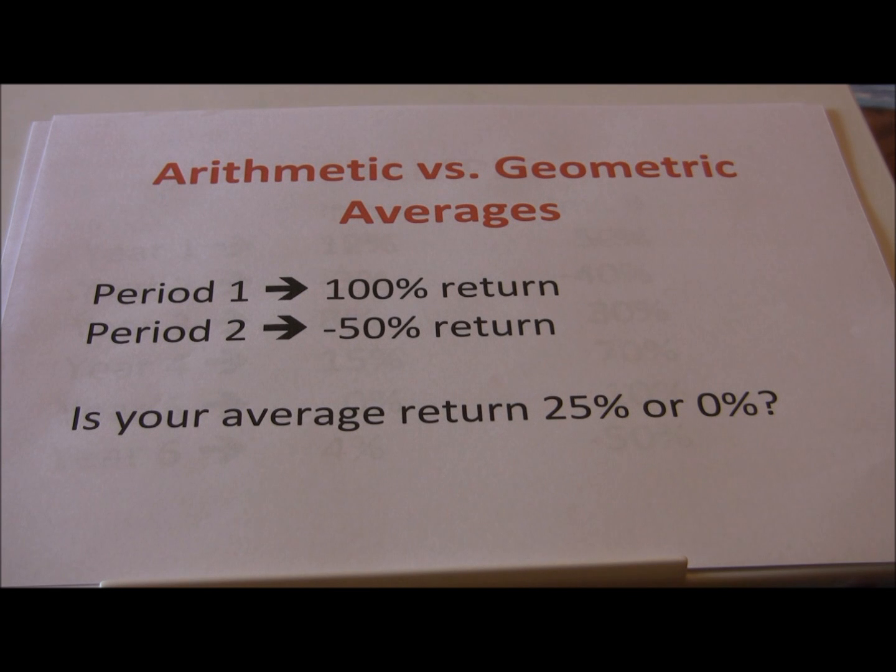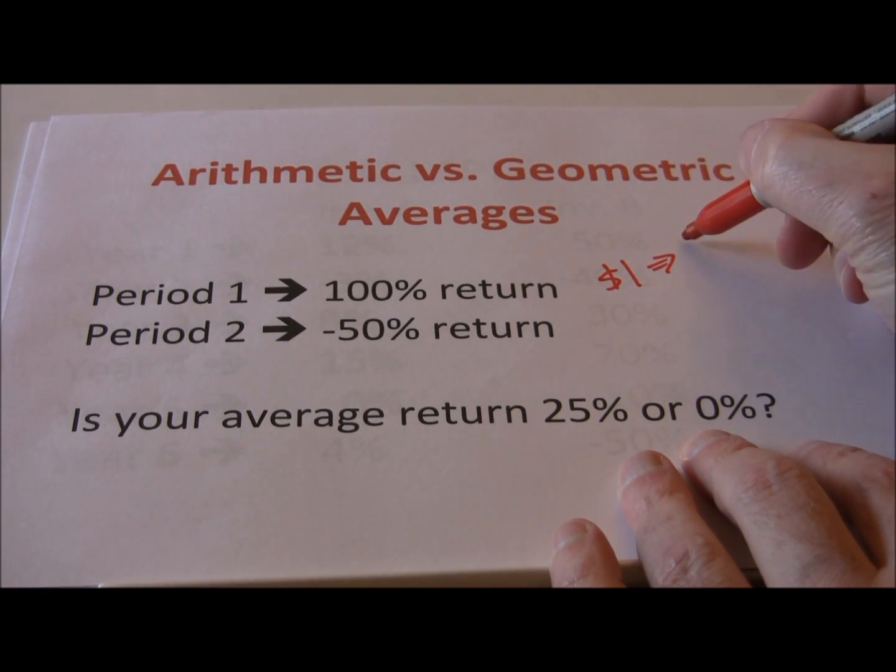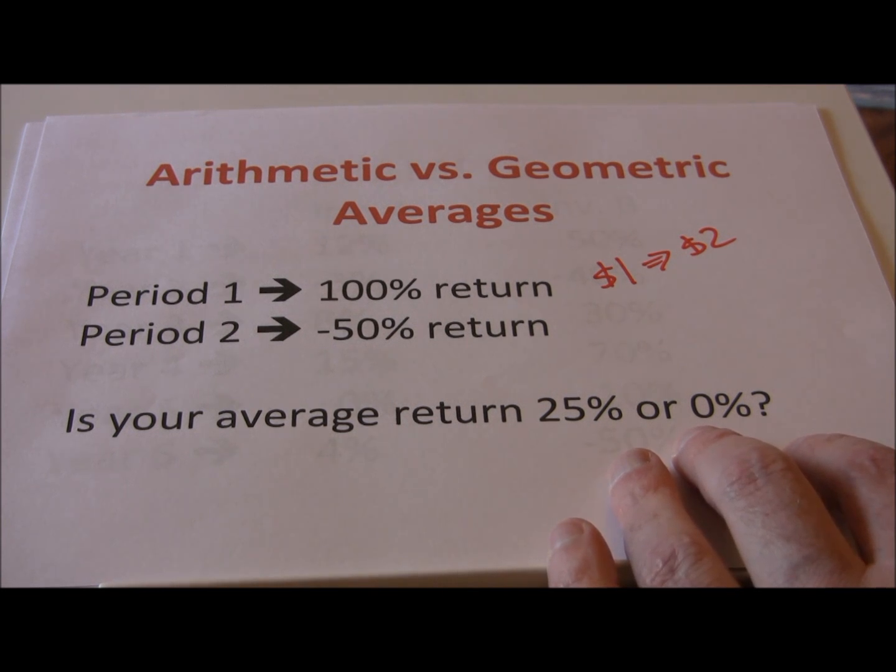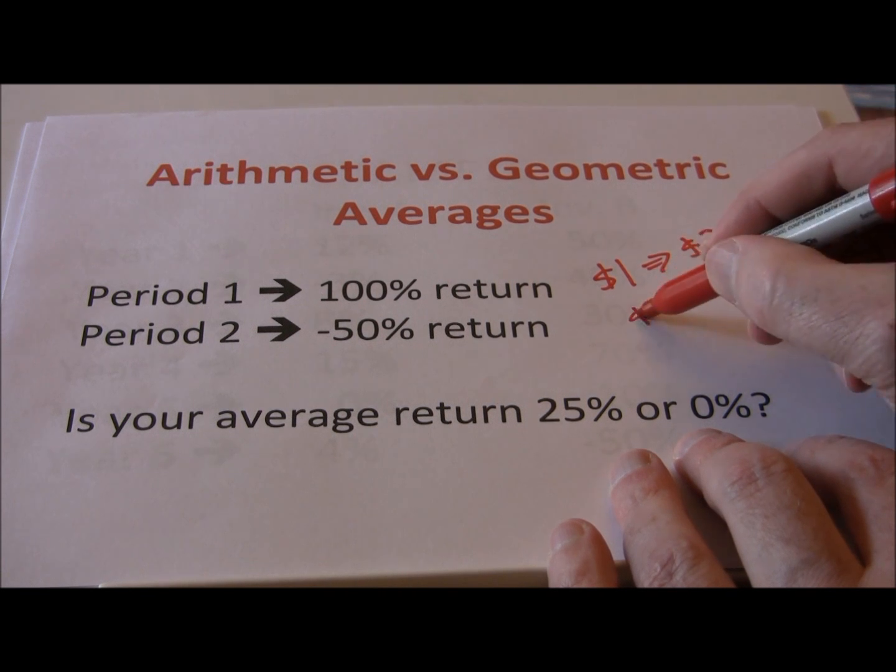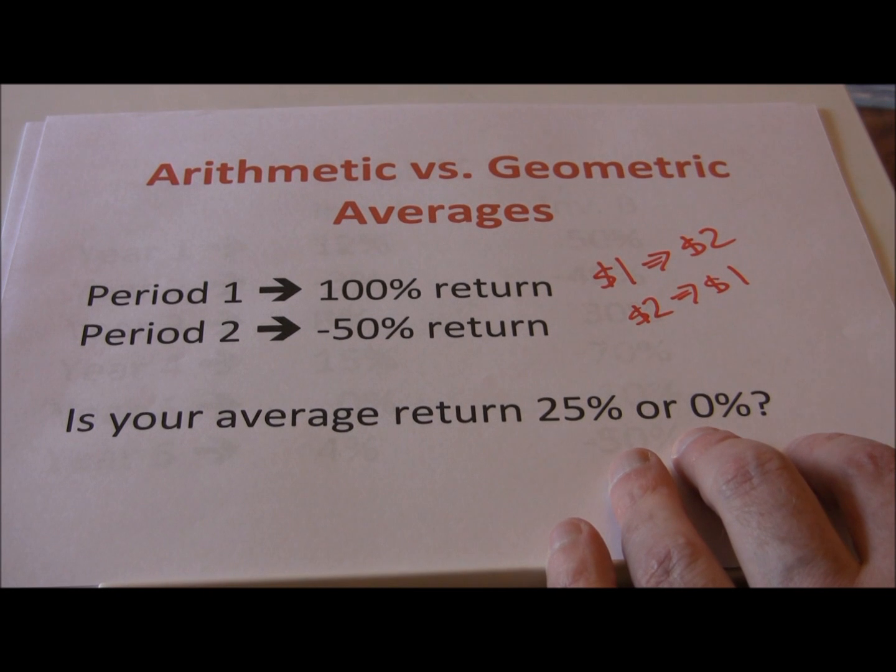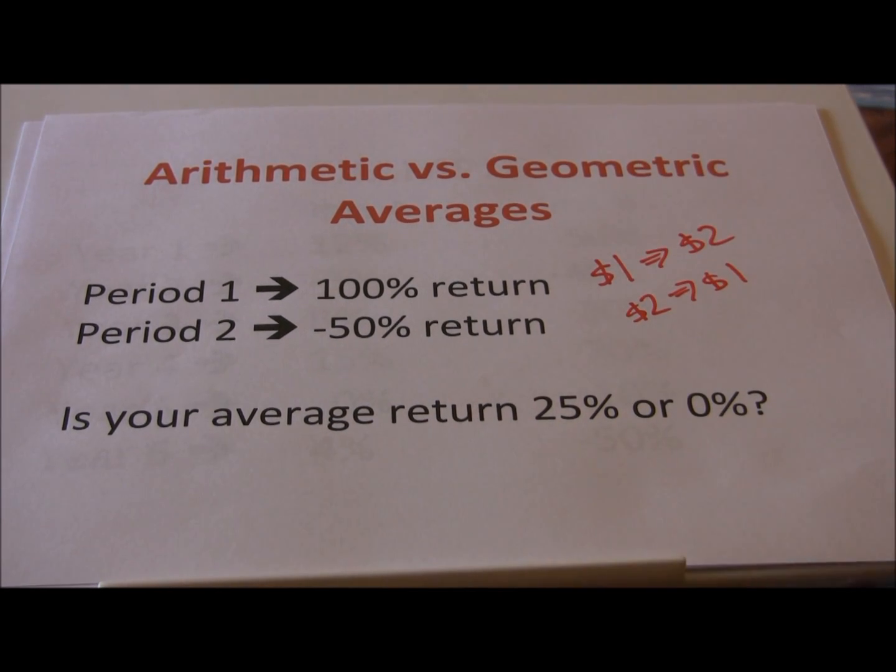In year one we earn a hundred percent return, so a $1 investment grows to two dollars. In period two we earn a negative fifty percent return, so that two dollars is only worth one dollar at the end of the second year. Is our average return during this period twenty five percent or zero percent?